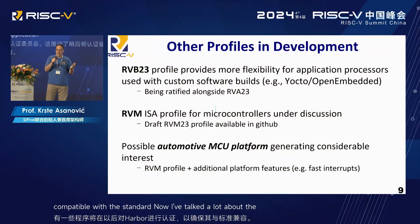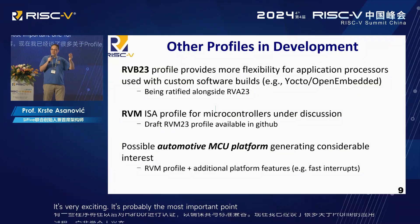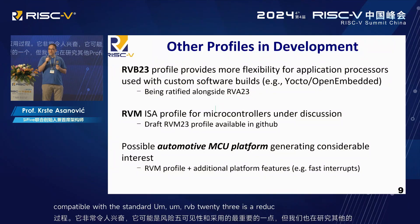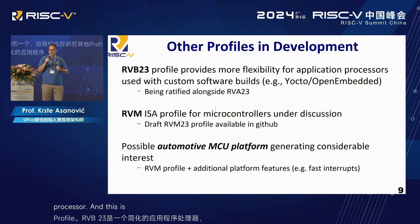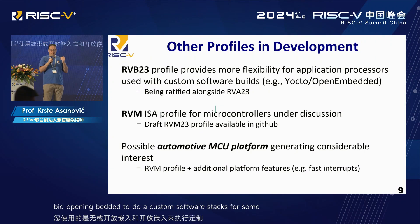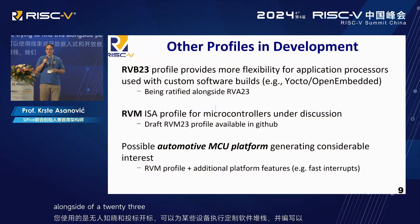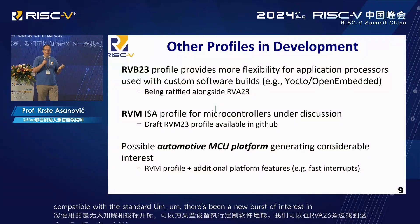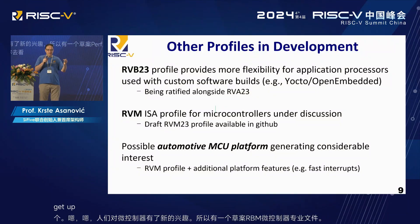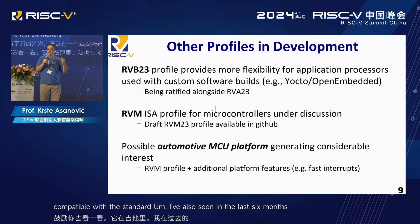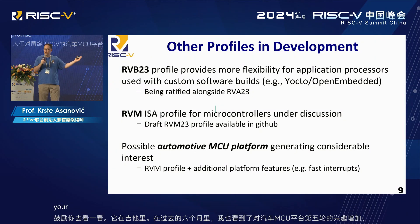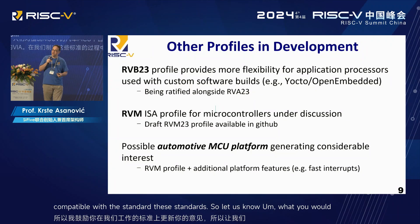We are also working on other profiles. RVB23 is a reduced, simpler application processor, designed for where there's more custom software built — using Yocto or OpenEmbedded to do a custom software stack for some device — and we're ratifying this alongside RVA23. There's also been a new burst of interest in microcontrollers, so there is a draft RVM microcontroller profile — I encourage you to go take a look on GitHub. And in the last six months I've seen a big increase in interest in an automotive MCU platform around RISC-V. I encourage you to come to RISC-V International, provide your input, and contribute to the development of those standards.